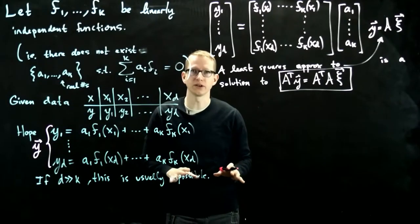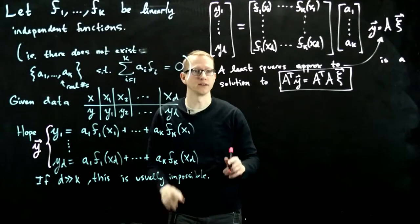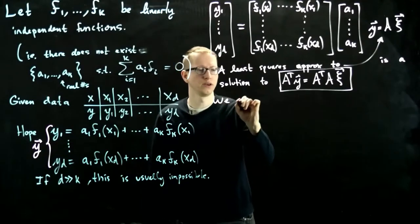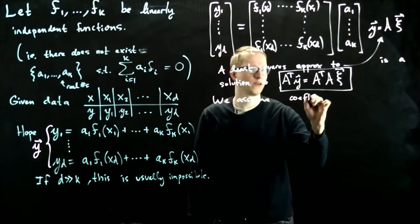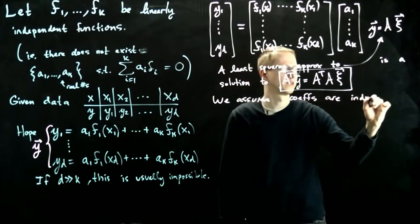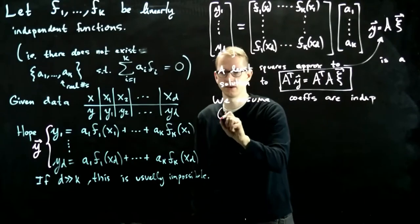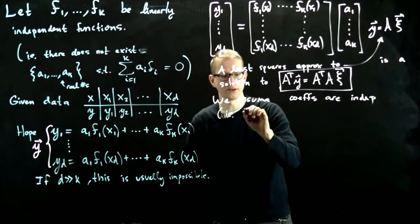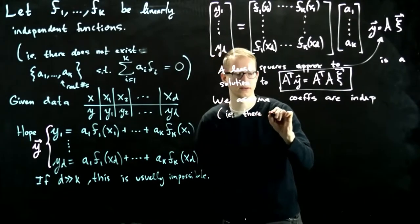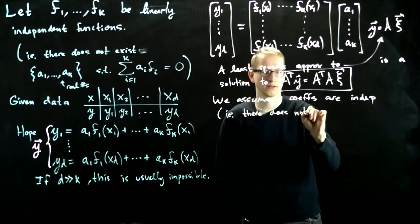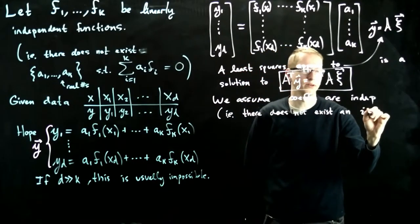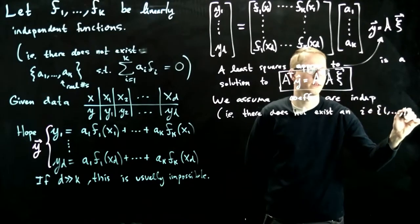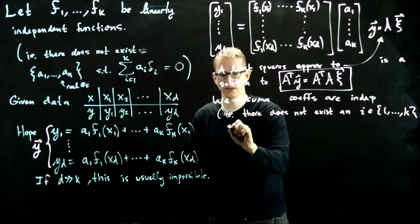I'm not talking about linear independence, I'm just talking about independence. So we assume the coefficients are independent. And this just means, there does not exist an i from 1 through k such that...